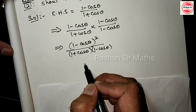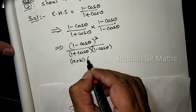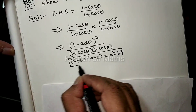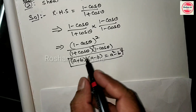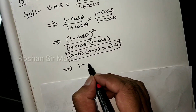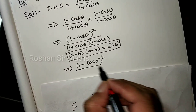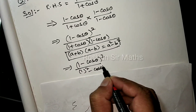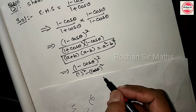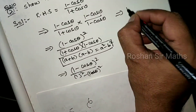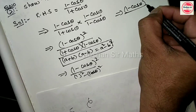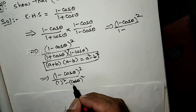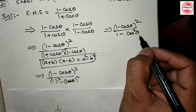Denominator में यह (a plus b) into (a minus b) की form में है। (a plus b) into (a minus b) = a square minus b square। तो denominator बन जाएगा: 1 square minus cos square theta, यानी (1 minus cos square theta)। तो हमारे पास है: (1 minus cos theta) whole square by (1 minus cos square theta)।